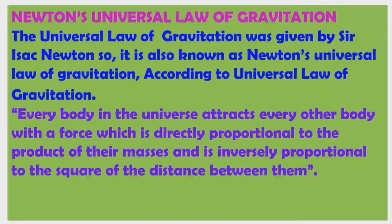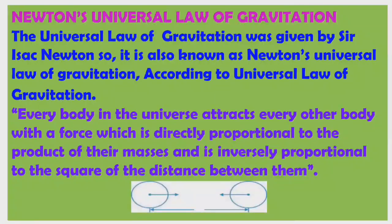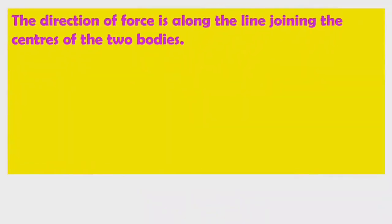Newton's universal law states that there is an attraction force between any two bodies in the universe. That attraction force is directly proportional to the product of their masses and inversely proportional to the square of the distance between them. Here we can see two bodies with masses m1 and m2, separated by a distance R. The direction of the force is along the line joining the centers of the two bodies.